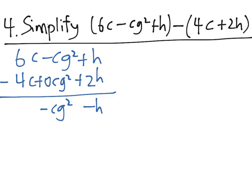And finally, on the left, we have 6c minus 4c, which gives us 2c. So now we have our final answer, 2c minus cg squared minus h.